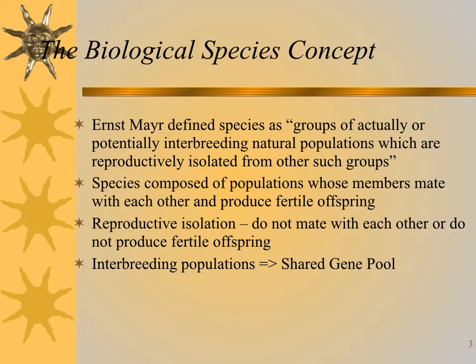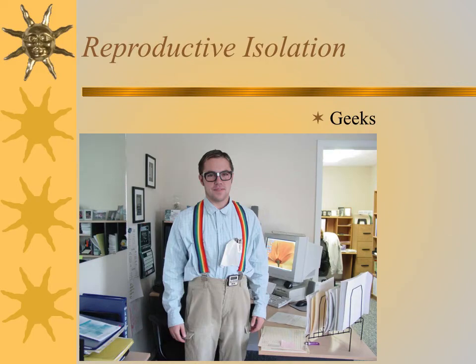This gets harder when we talk about organisms that are asexual, because then it doesn't take two parents to produce an offspring. But this shared gene pool is an important idea. How do these new groups come about? How do new species develop? The answer in short is reproductive isolation.